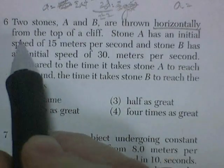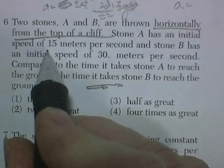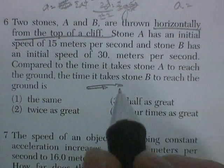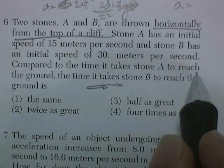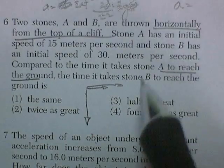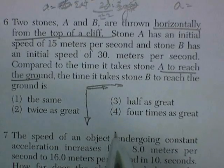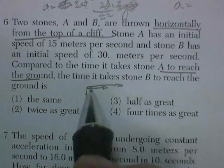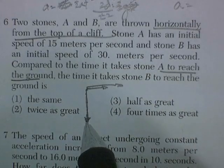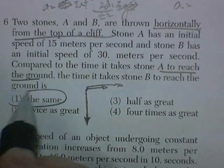Two stones are thrown horizontally from the top of a cliff. So you've got two stones that are going to be thrown from the top of a cliff. A has a velocity of 15 meters per second. And B has this initial speed of 30 meters per second. Compared to the time it takes stone A to reach the ground. Wait a minute. To reach the ground, it's only got to go this distance. This formula we just used. Distance equals VIT plus one half AT squared. Tells us the time it would take. Compared to that to the time it takes stone B to reach the ground. Well, they both have to go the exact same distance. They're going to be accelerated downwards by the same acceleration due to gravity. And their horizontal velocities have nothing to do with how much time it takes for them to fall. Same distance. Same time.